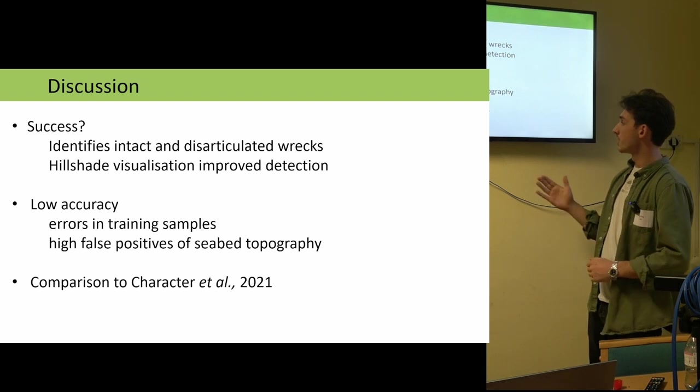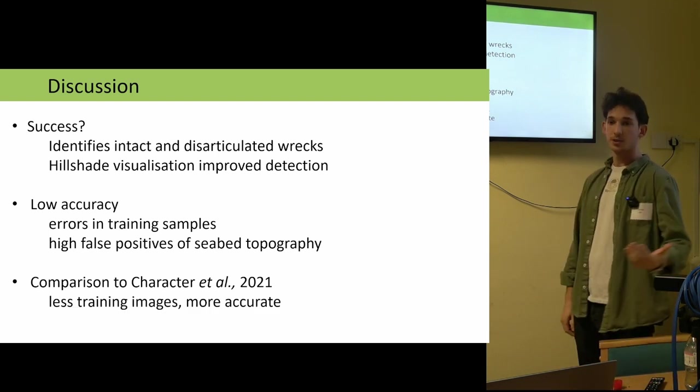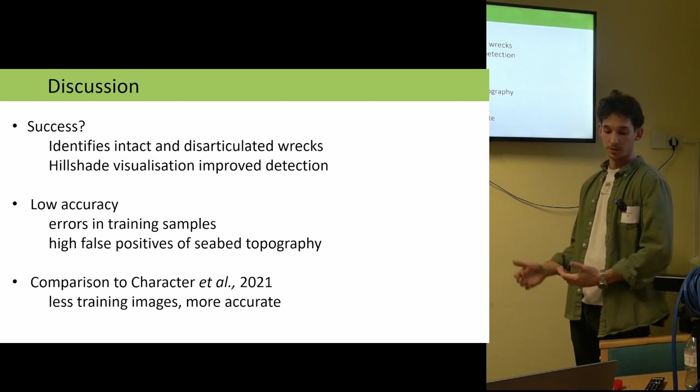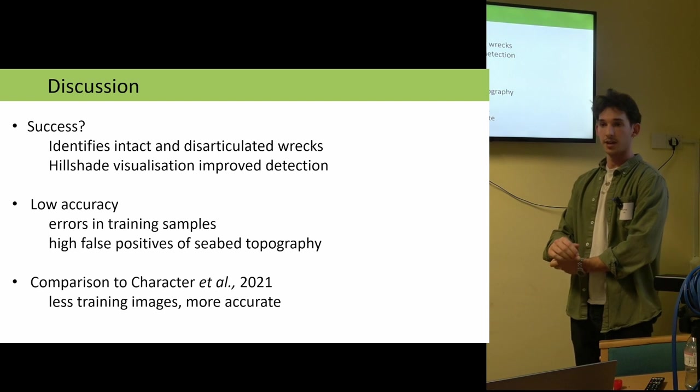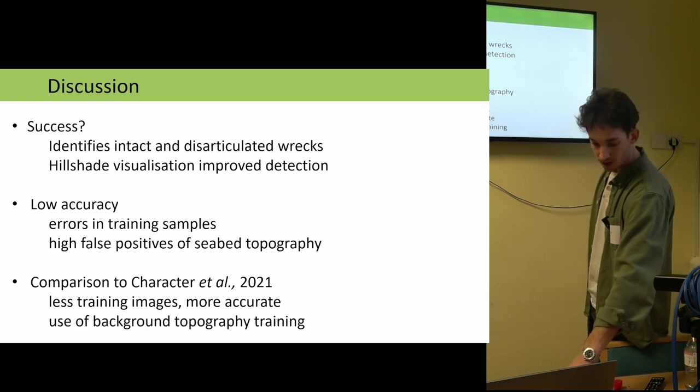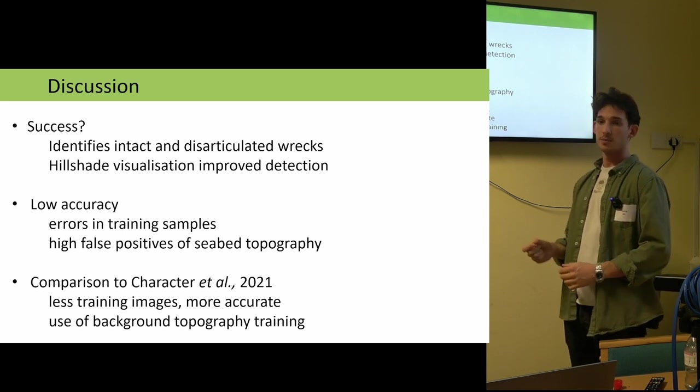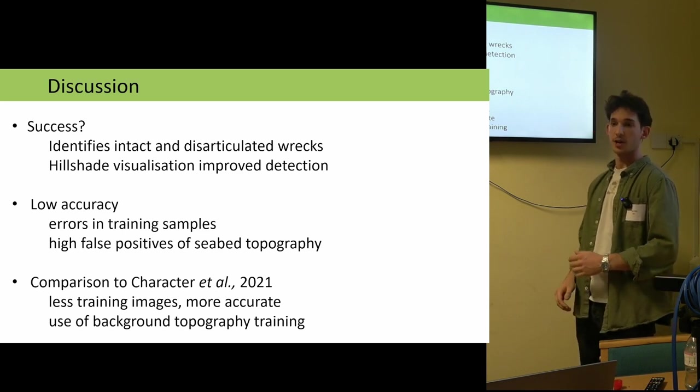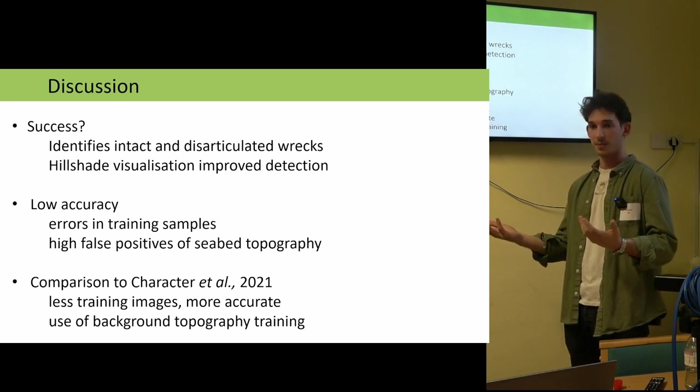Now, if we compare my results to the earlier study that I mentioned, they actually used much less training images than I did, but they were able to achieve vastly more accurate results at 90 plus percent accuracy that I mentioned earlier. And this is because they used that background topography in their training samples as a separate detection class. So they were able to train the model to detect shipwrecks as well as what not to detect in the background topography.